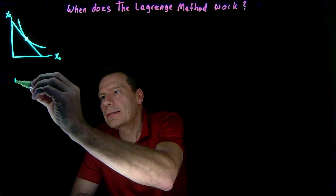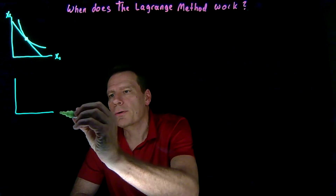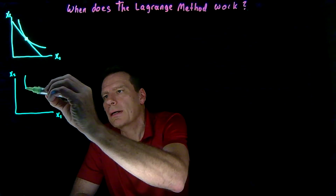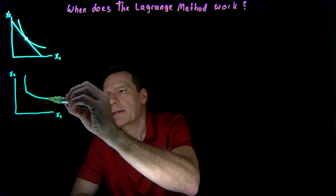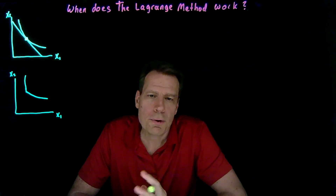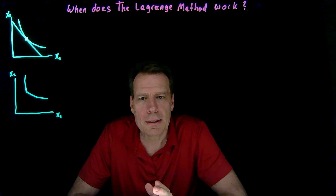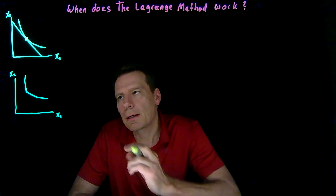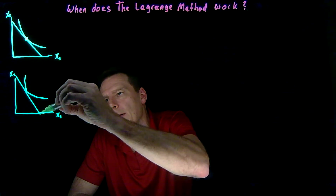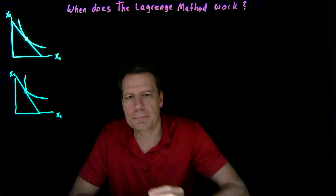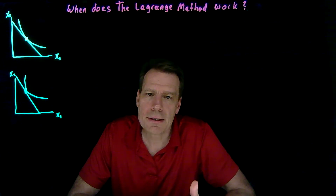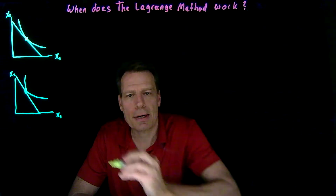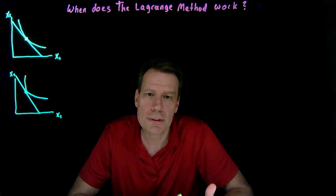First, let's look at the case of an indifference curve that has a kink in it — an indifference curve that has a kink like this. Perfect complements are an example of this, but they don't have to be so extreme as perfect complements, as long as there's a kink. In that case, the optimal consumption bundle might lie on that kink, but that's not a tangency. There's a corner here, and there are lots of slopes that can hang on that corner — it's not one unique tangency.